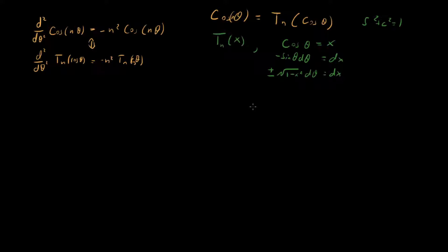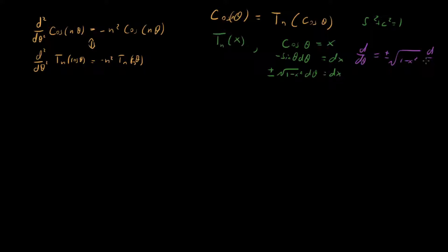Now let's rewrite our differential equation using this, because what this tells us is that d/d-theta — which is what we have currently — can be re-expressed as plus-or-minus root one-minus-x-squared times d/dx. We're basically just saying: let d-theta go to dx, and when you do that, you get this.